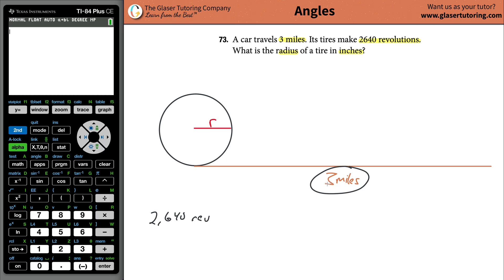Well, if it traveled three miles, pretend it made one revolution. Simplify the problem. Pretend this tire made only one revolution, and it traveled a total of three miles. That would mean that the circumference of this particular tire would be three miles, because as it rotated around one whole time, it traveled a total distance of three miles.